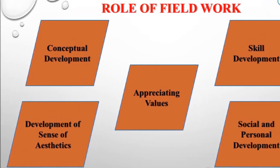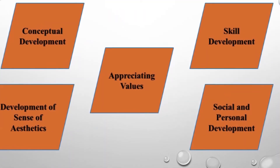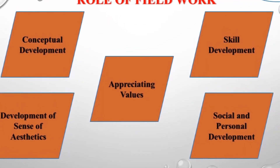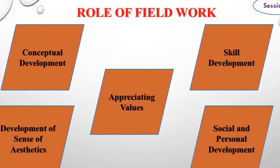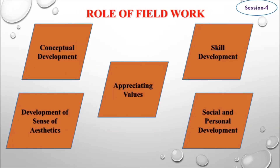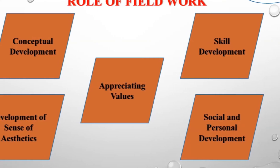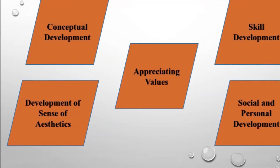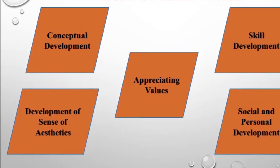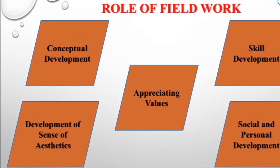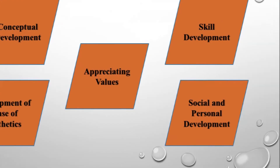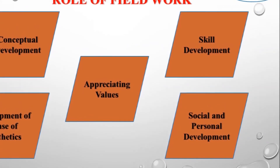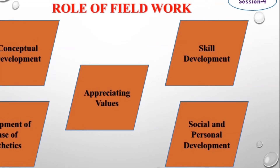The development of the sense of aesthetics is another role. How aesthetically well is the planning of a landscape? How has nature drawn its plan and how have human beings drawn theirs — ridgeline settlements, settlements along the river, settlements on rock structures? Various places have different senses of aesthetics. Finally, social and personal development is the fifth key point: interaction with society teaches us how people live in sync with nature and with each other.